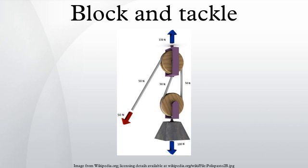The increased force produced by a tackle is offset by both the increased length of rope needed and the friction in the system. In order to raise a block and tackle with a mechanical advantage of 6 a distance of 1 meter, it is necessary to pull 6 meters of rope through the blocks.